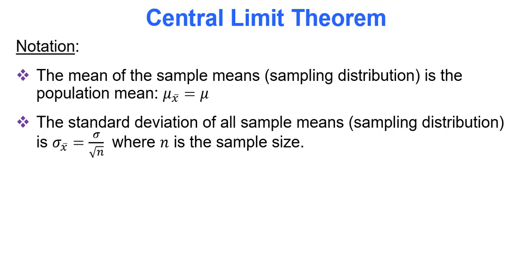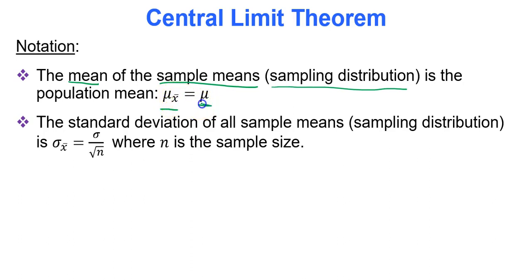The mean of the sample means — also known as the sampling distribution — is important to understand. If I take test results 10, 20, or 30 at a time, calculate each of their means, and then average all those means, the mean of that sampling distribution, mu sub x-bar, will equal the mean of the distribution itself, mu.